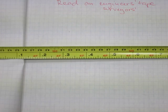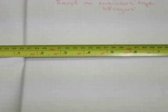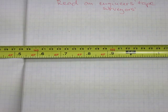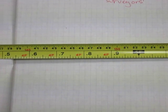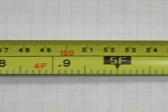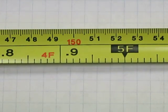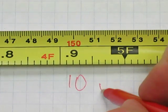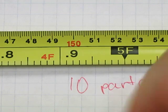And those decimals read 0.1, 0.2, 0.3, 0.5, 0.8, 0.9. Let's zoom in even closer. The reason for these decimals is because the foot has been divided into ten parts. Ten parts in a foot.